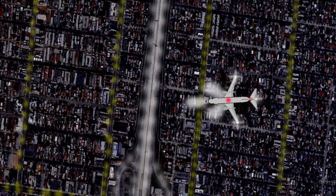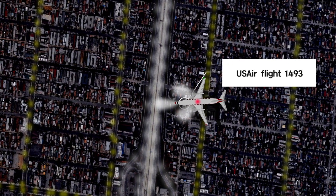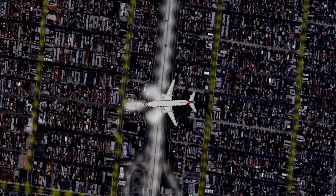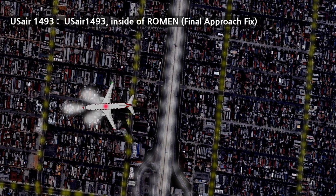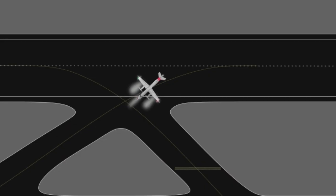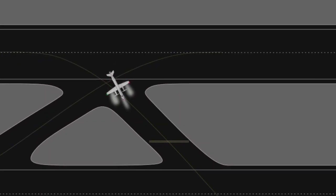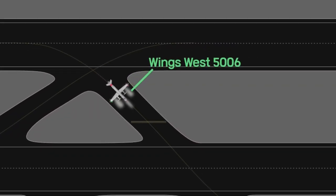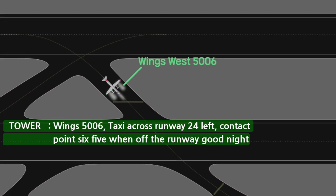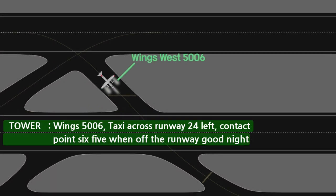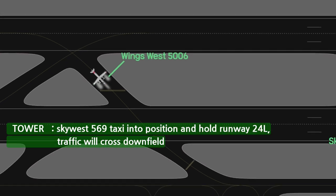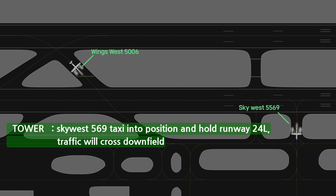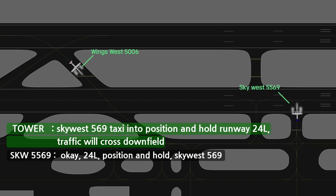The Boeing 737 Type U.S. Air 1493, which was approaching 6 miles on final for landing runway 24L, informed his position by contacting the controller. At that time, the controller tried to contact Wings West 5006 waiting at midfield taxiway 52 to cross runway 24L. The controller instructed Skywest 5569 to enter runway 24L and hold on the runway because of Wings West 5006.